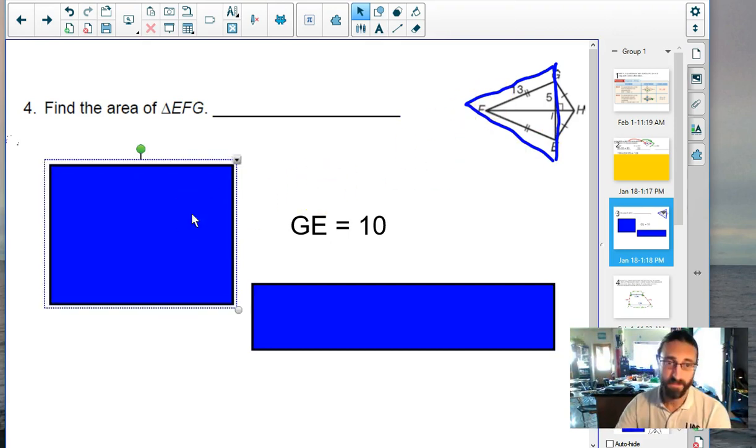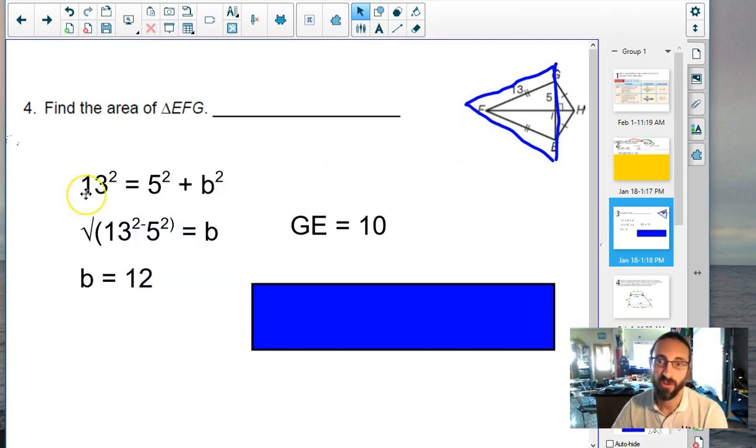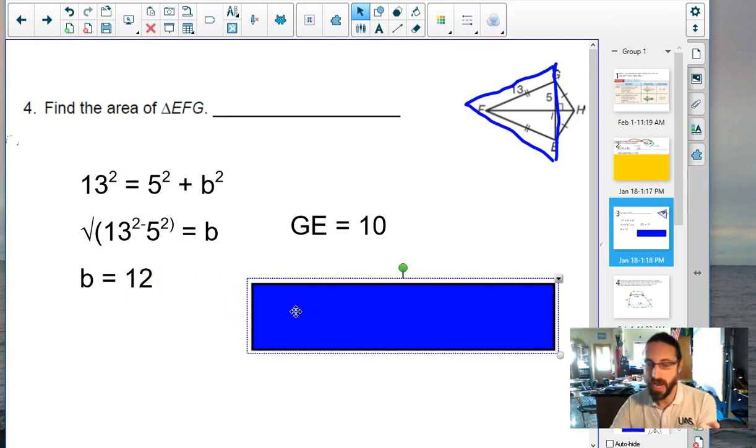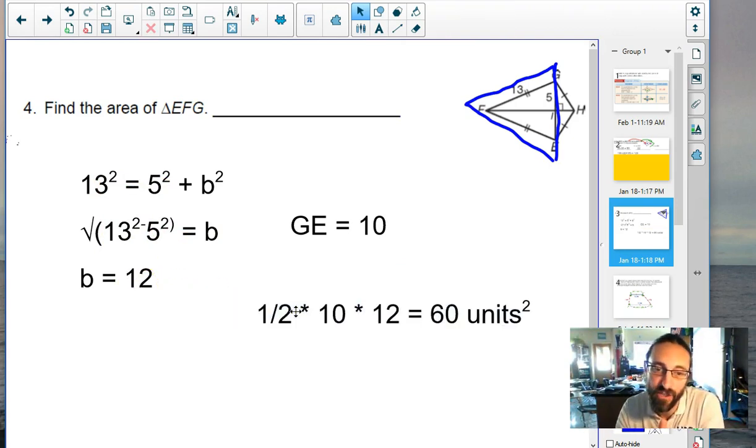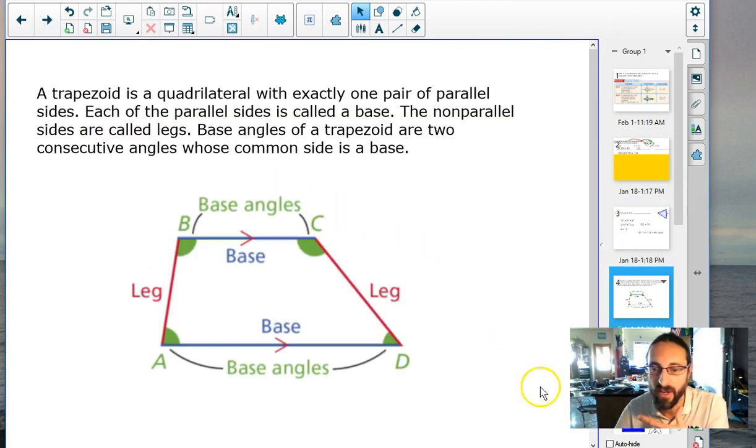How am I going to find the height? Well, I'm actually going to use the Pythagorean theorem backwards. So 13 squared, 13 is the hypotenuse, equals 5 squared plus B squared. And you may recognize this as a Pythagorean triple, which is 5, 12, 13. All right. So I do my math. I get B is 12. So now, area of a triangle, half. The base, which is 10. The height is 12. And you get 60 square units. Let me pause the video here because Chandler just walked in.